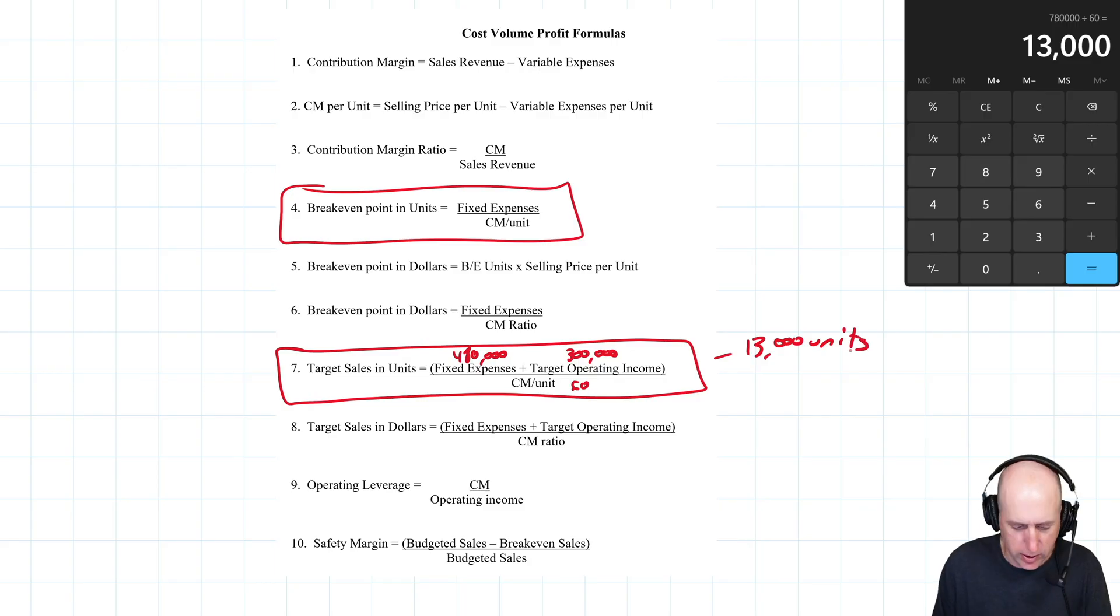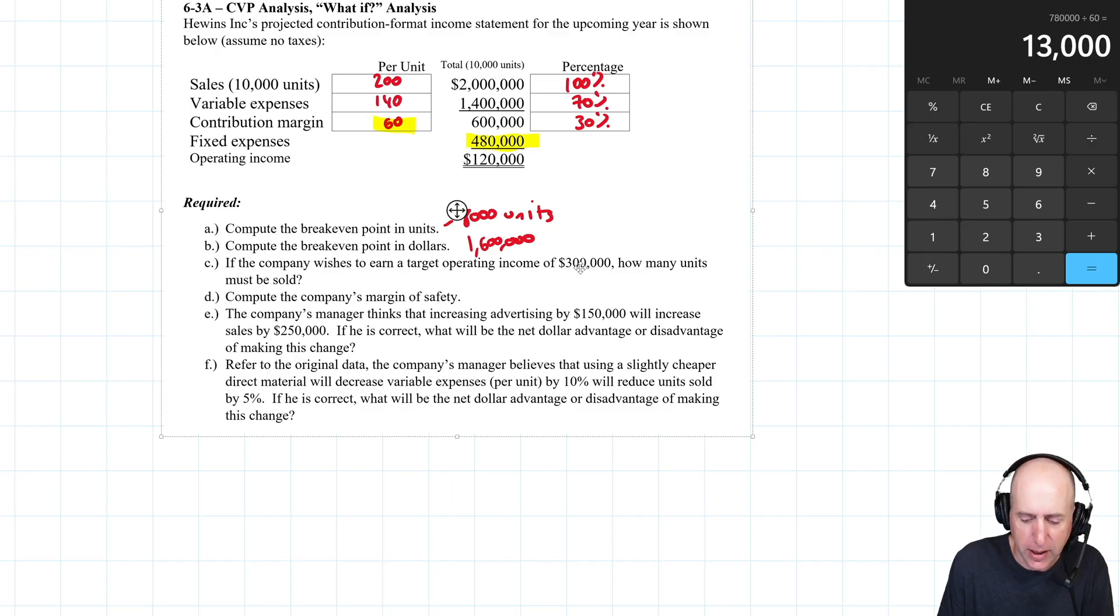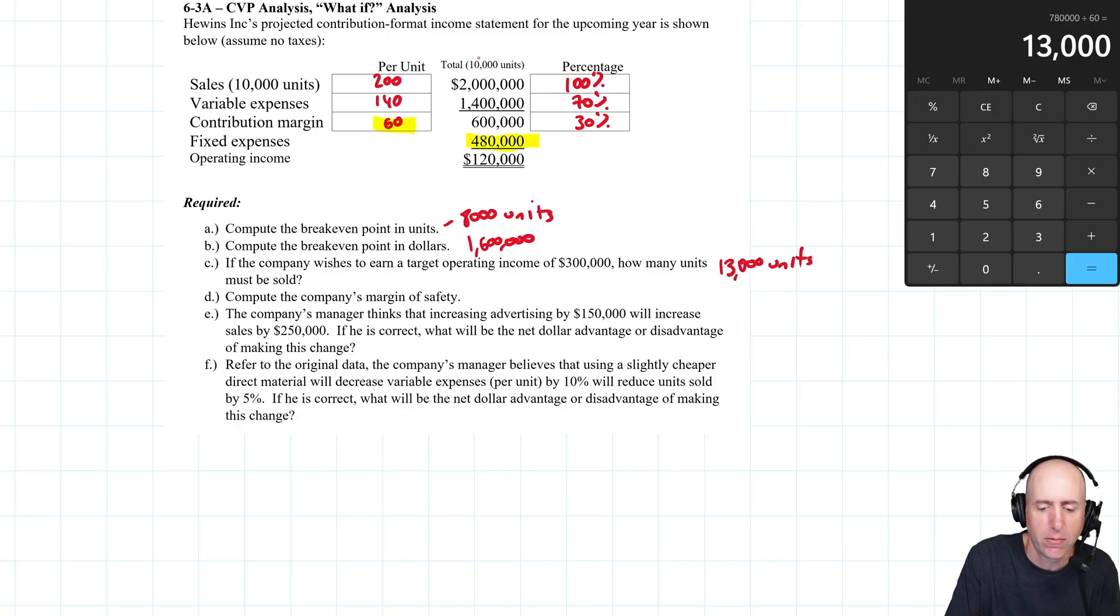Let's remind ourselves what that means. Of course, we're not in this business to break even. We have goals. If I want to make $300,000, I've got to sell 13,000 units. You can see that's higher than what I'm expecting to sell. I'm expecting to sell 10,000 units. So I need a 30% uplift in my sales if I want to hit my goal of making $300,000.